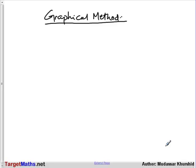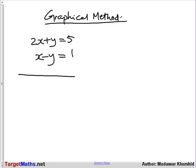Graphical method for solving simultaneous equations. Let's remind ourselves of the two equations we had: 2x plus y equals 5, and x minus y equals 1. Before we can solve simultaneous equations graphically, we will need to draw the graphs of these two equations. In order to do that, we need a couple of points on each line and we put those points onto a grid.